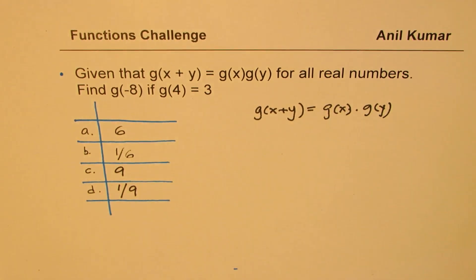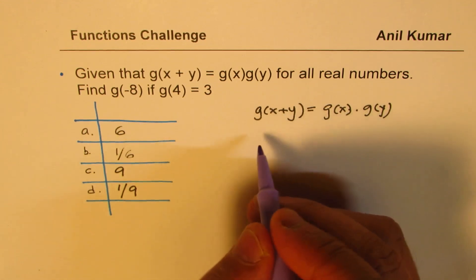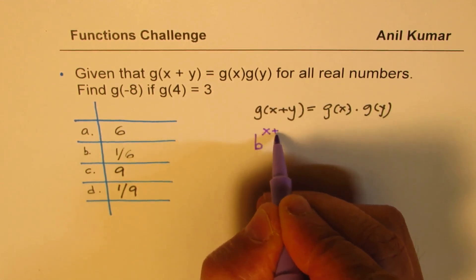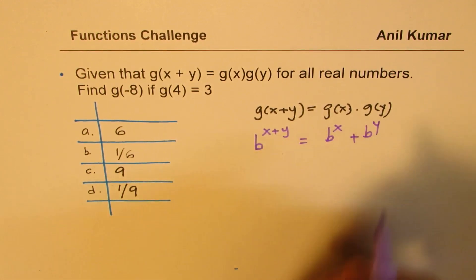Now, we see, normally in exponential functions, this rule being followed. So what I will do here is, since we are open to solutions, what I will do here is, I'll consider a function which is b to the power of x plus y, right? And we know it is equal to b to the power of x plus b to the power of y.